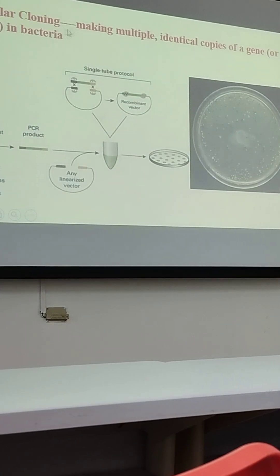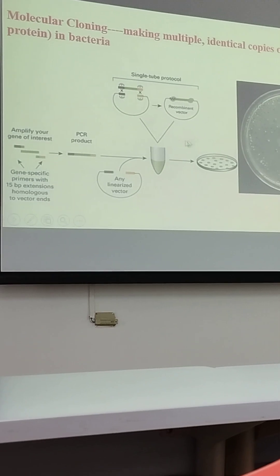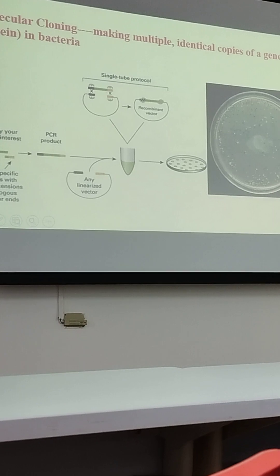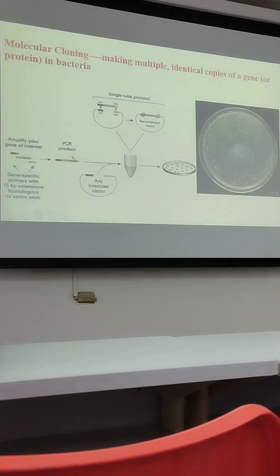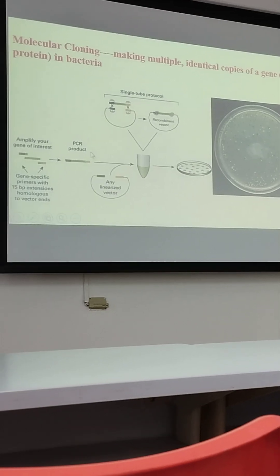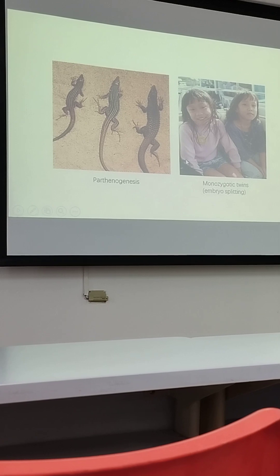So this is the molecular cloning as we showed last time. The white and the blue bacteria screening for, you know, harvesting a lot of PCR products. So today we will talk about SCNT.